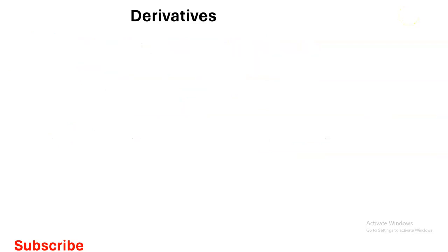Now let me also show you how to approach a different kind of square root so I don't leave you in the dark. Say they give you the square root of 4x squared — that's the 2nd root of 4x squared. You can pause and try it first. Remember: the 2 on the outside affects everything inside.